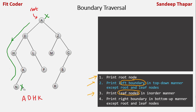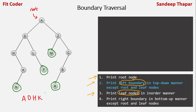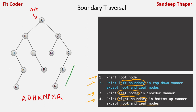The third step is to print all the leaf nodes in in-order manner. The leaf nodes are N, P, M, and R. The fourth step is to print the right boundary in a bottom-up manner, excluding the root and the leaf nodes. Excluding R and A, we print B, C, and Z — giving us the complete boundary traversal.